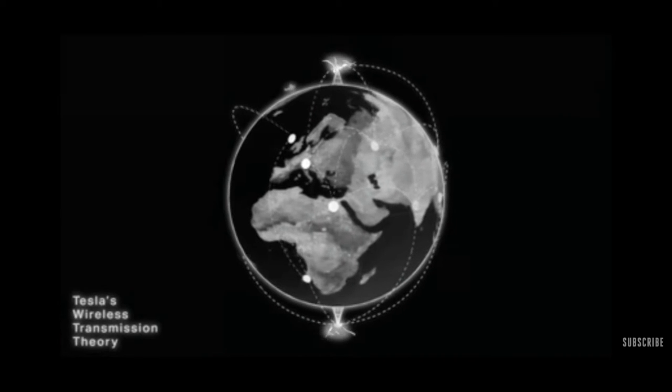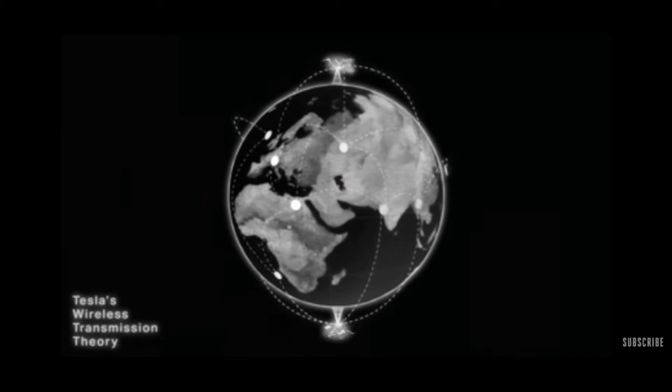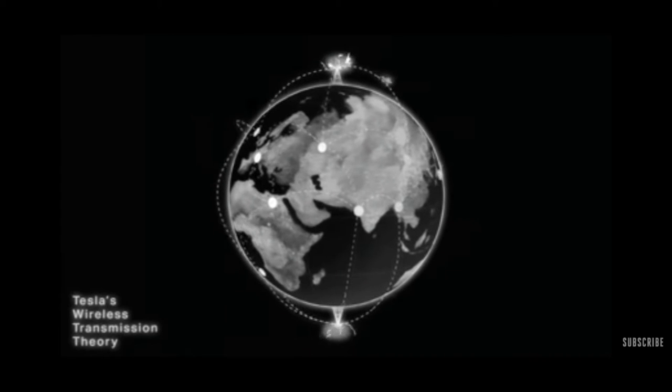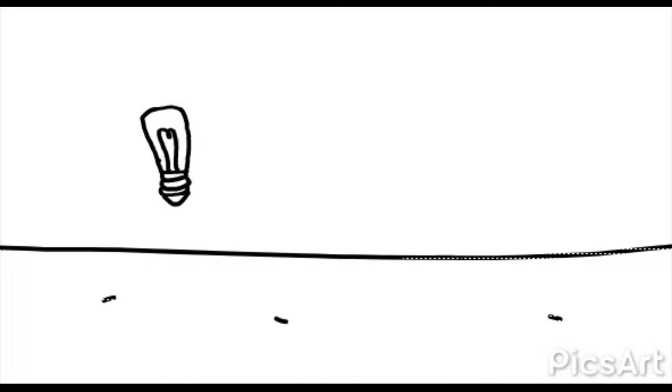Some of these towers would pump electricity into the earth and these electromagnetic waves would bounce back and forth inside the earth and spread all over. The rest of the towers would be used to extract the electricity from the ground.